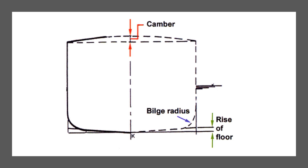Then I want to explain what is camber. The camber, as you see in the drawing here, is the transverse curvature of the weather deck. This transverse curvature is provided for strengthening as well as for draining of water. This curvature helps to ensure sufficient drainage of any water that may collect on deck due to either rain, deck washing, or any kind of spillage.